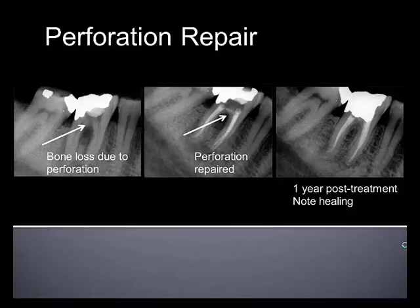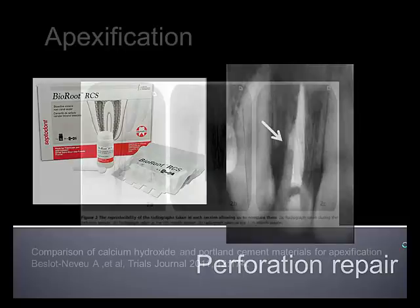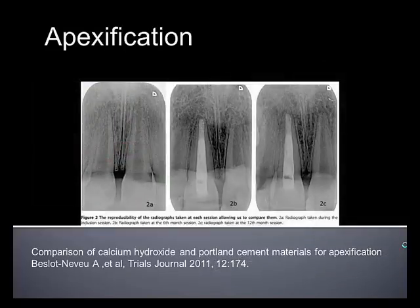We can use it for perforation repair, as we see here, where we're doing the repair at the same time as placing the gutta percha. We can also do perforation repair on an anterior tooth, once again using it at the same time as a sealer — easy to place and easy to get the results we want. And with the slower setting of these Portland cement materials, they're easier to place for apexification when compared to traditional calcium hydroxide apexification procedures.